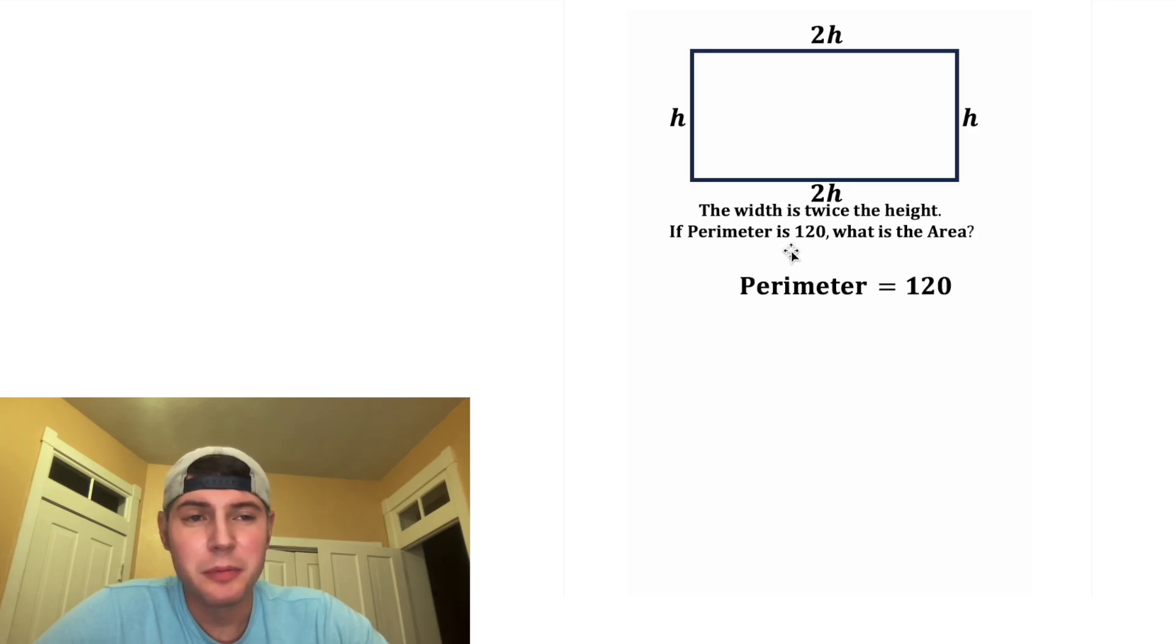We need the perimeter to be 120. That means we need h + 2h + h + 2h to equal 120. And h + 2h + h + 2h is equal to 6h.